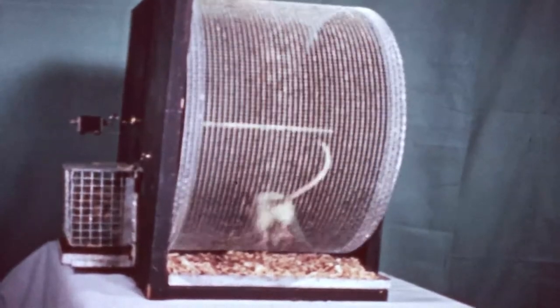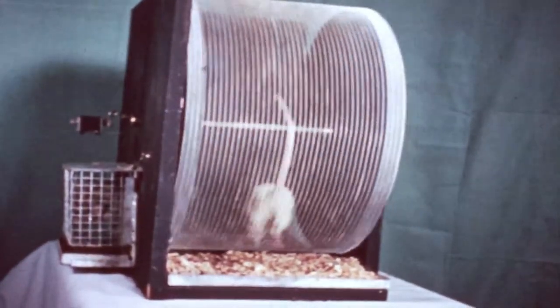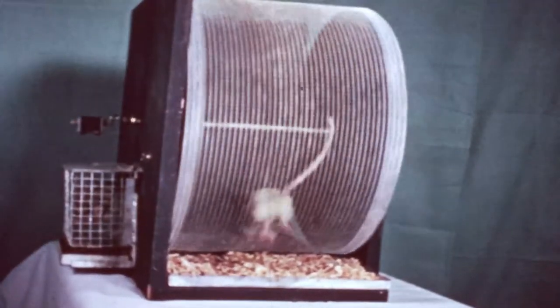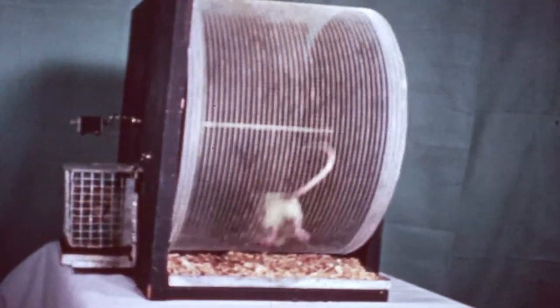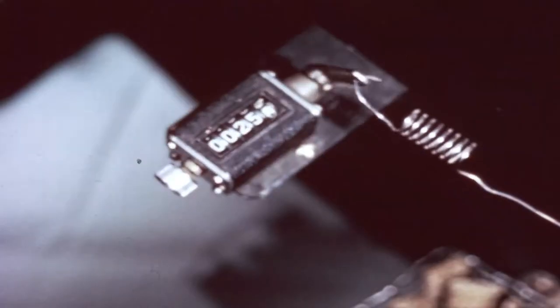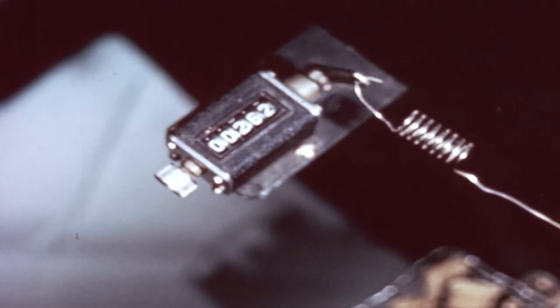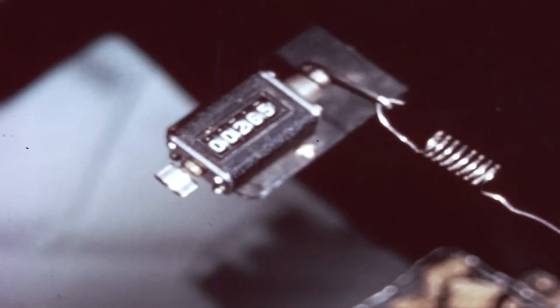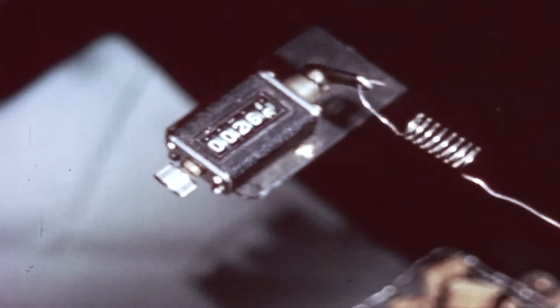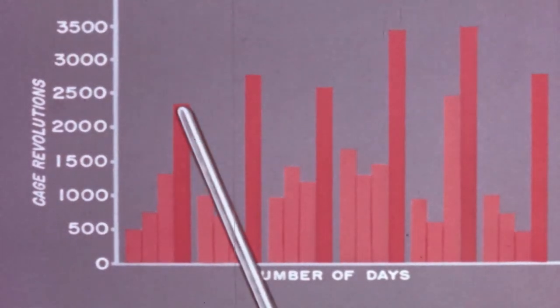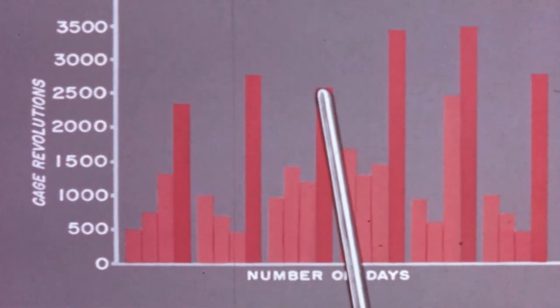Let us now examine some of the methods which may be used for timing the various changes in the reproductive cycle. If a female rat is confined to an activity cage, observations of her running activity may give a clue as to the time of the period of heat. Recording the number of revolutions of the drum for each day and plotting these data as a graph, we observe the animal runs considerably each day, but runs a particularly long distance approximately every fourth day.